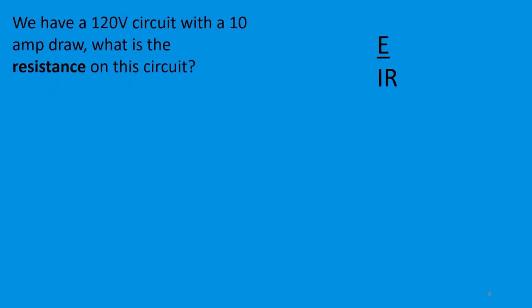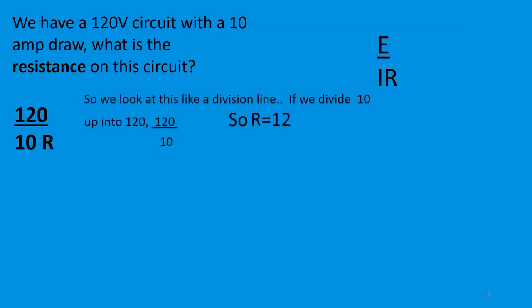We have a 120-volt circuit with a 10-amp draw. What is the resistance on this circuit? You plug the knowns into their respective spaces — we know the voltage and the amperage. If we look at this like a division line and divide 10 up into 120, we get 12. So the resistance in this case is 12 ohms.